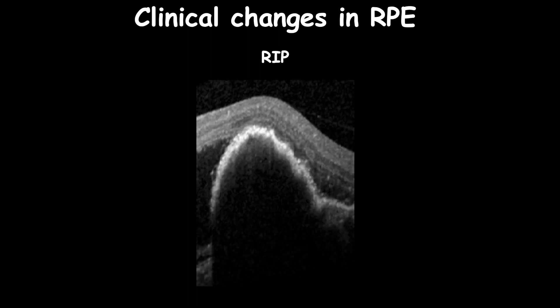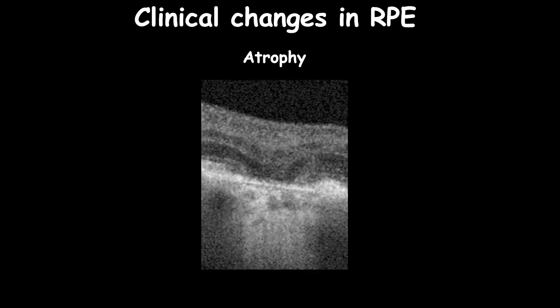RPE tear is a tear in the RPE layer due to opposite traction forces inside the pigment epithelial detachment, and happens most likely as a complication of intravitreal antibody therapy. RPE atrophy is a thinning or porosity of focal RPE; it can be focal RPE atrophy or it can be diffuse, developing into geographic atrophy.